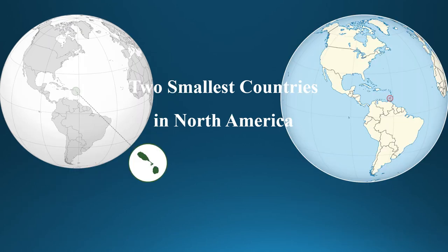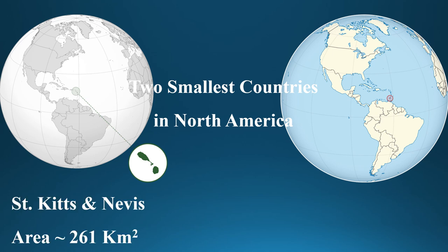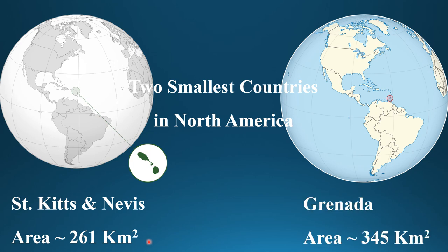The two smallest countries in North America are Saint Kitts and Nevis, and Grenada. Saint Kitts and Nevis is the smallest country in the Caribbean region — it is an island with a total area of 261 square kilometers. Grenada is also in the Caribbean region, with an area of 345 square kilometers.